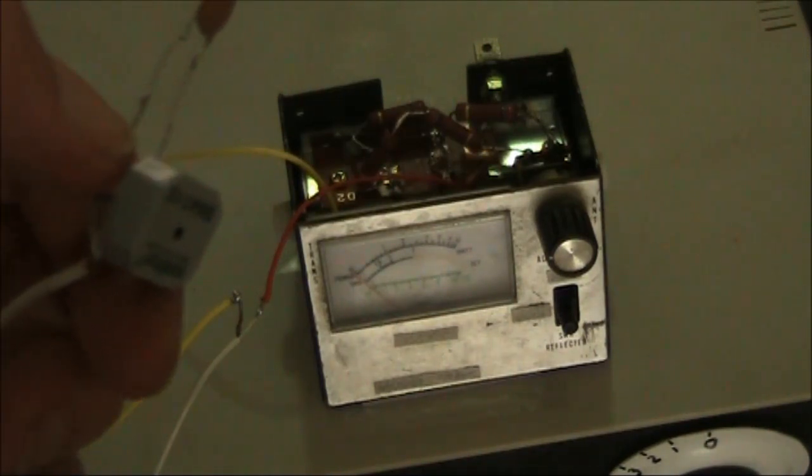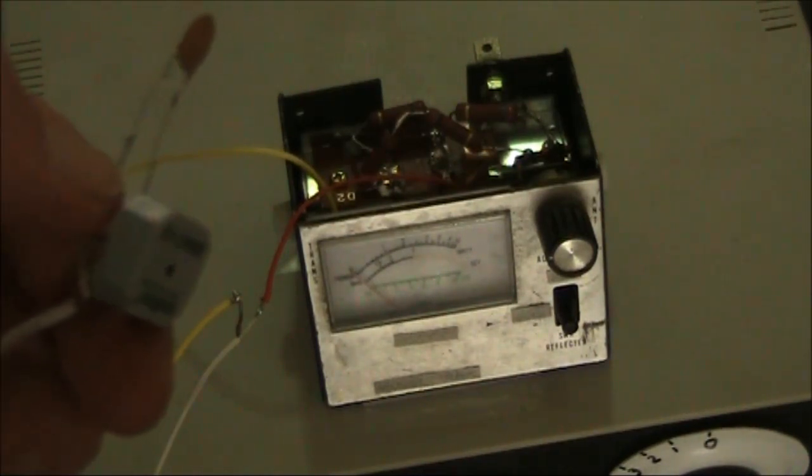I'm not going to show you a circuit diagram, because it's simple. All you do is you wire the transducer in parallel with the meter movement.